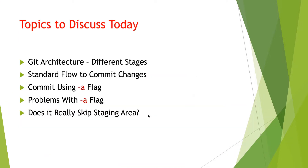In this video I'm going to decode this — does it really skip the staging area or not? To understand this, these are the topics we'll discuss today: we'll briefly talk about git architecture, focusing on the different stages in git, then the standard commit flow, then performing a commit with the -a flag, the problems associated with this command, and finally whether it really skips the staging area.